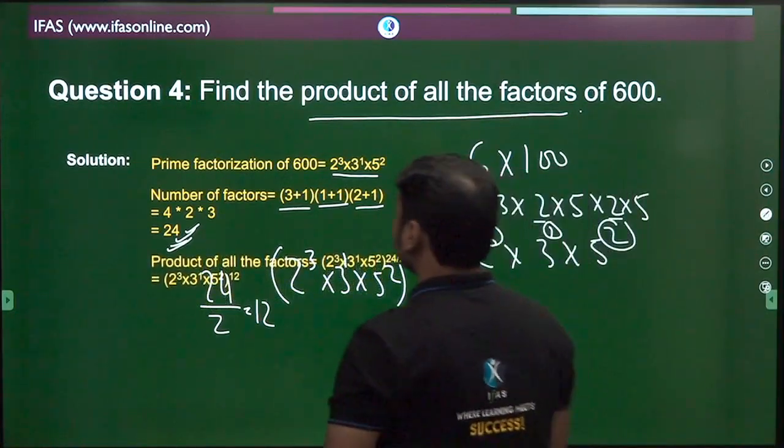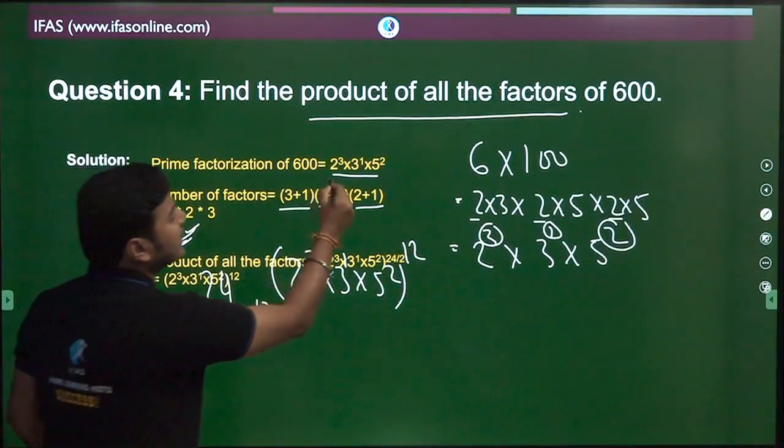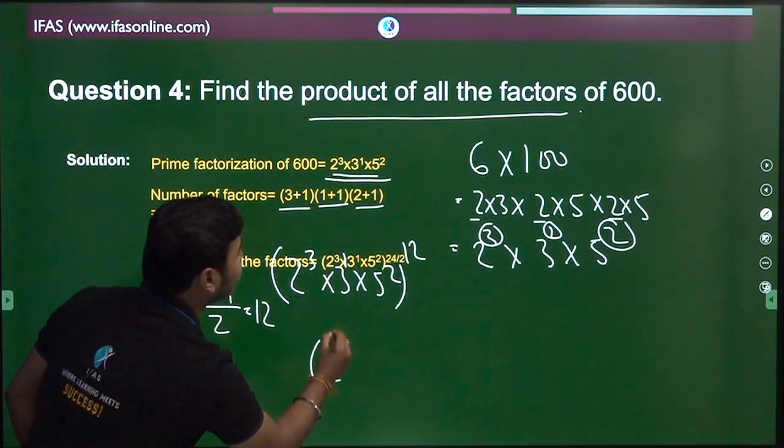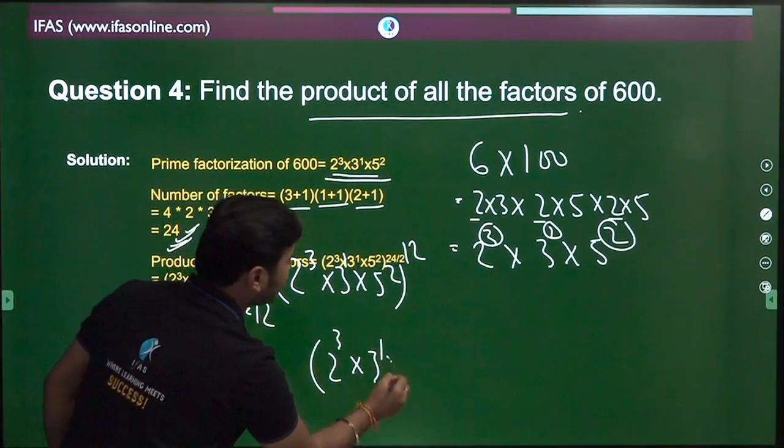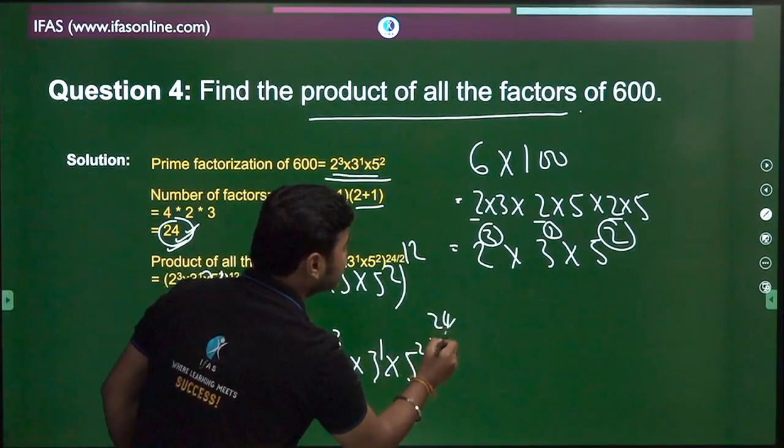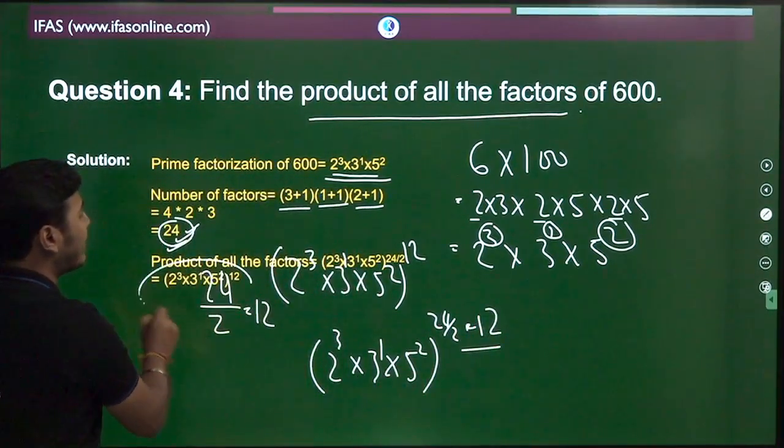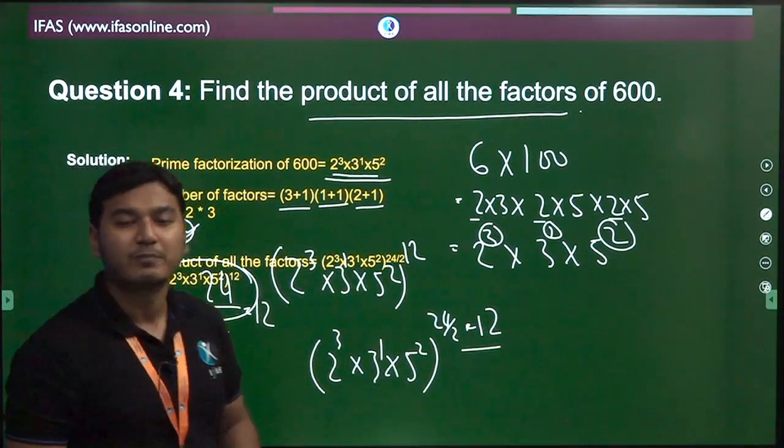So you see, the product of all the factors—what will be the formula? Whatever comes here, on top of it you have to write the number of factors divided by 2, which finally becomes 12. So raised to the power 12 will be the answer. Students, I hope you got it.